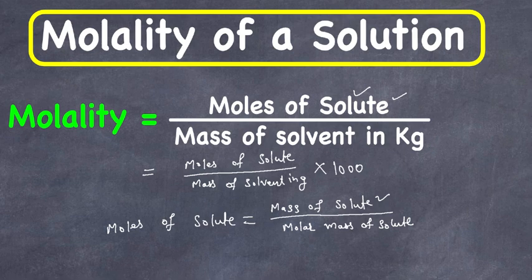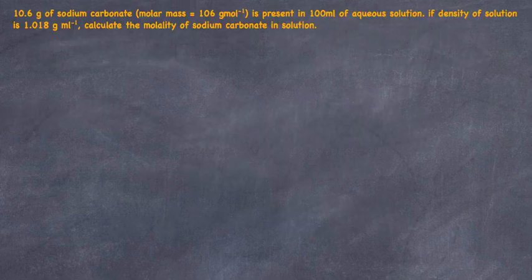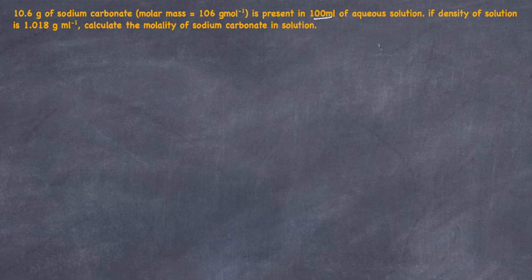Now let's go over one example to understand the concept. We have 10.6 grams of sodium carbonate, whose molar mass is 106 grams per mole, present in 100 milliliters of solution. The density of the solution is given, and we're going to calculate the molality of sodium carbonate in the solution.